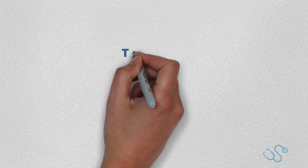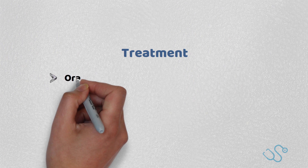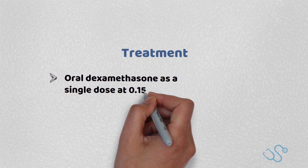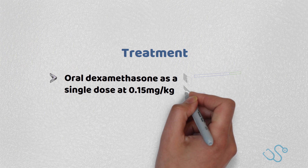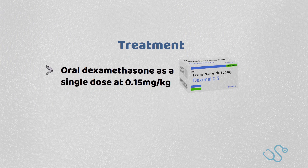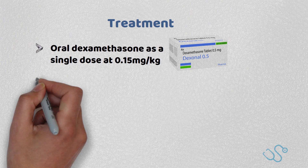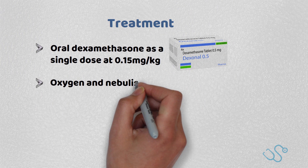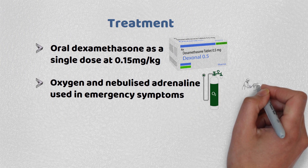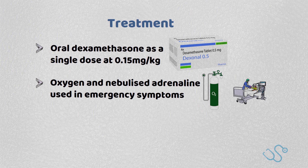Treatment is often conservative, but NICE advises the use of oral dexamethasone as a single dose of 0.15mg per kg to all children with croup regardless of whether symptoms are mild, moderate or severe, with oxygen and nebulised adrenaline used in emergency situations.